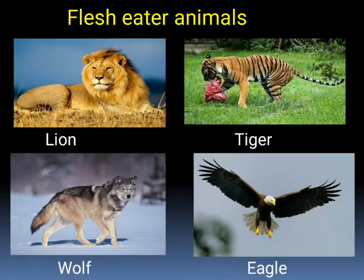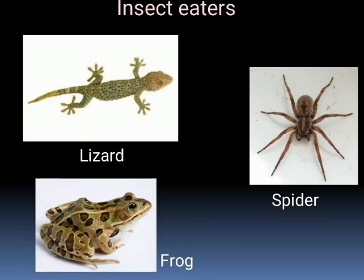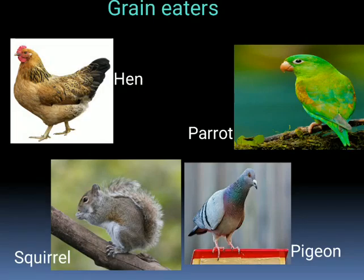Some animals eat the flesh of other animals. They are called flesh eaters. Lion, wolf, tiger and eagle are some flesh eaters. Some animals eat insects and worms. They are called insect eaters. Lizard, spider and frog are some insect eaters. Some animals eat grains. They are called grain eaters. Hen, parrot, squirrel and pigeon are some grain eaters.